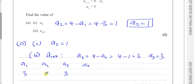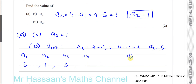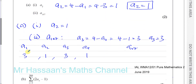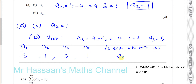So a₄ = 4 − 3 = 1, then 4 − 1 = 3, and it continues as 3, 1, 3, 1, 3, 1 and so on forever. The pattern is: all odd-indexed terms equal 3, and all even-indexed terms equal 1. Since 107 is odd, a₁₀₇ must also equal 3. That's the answer to part a(ii).